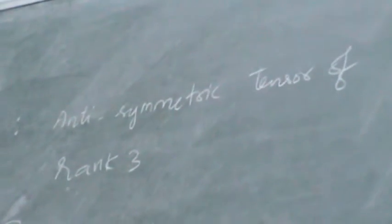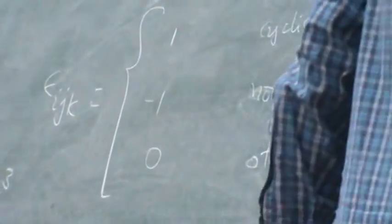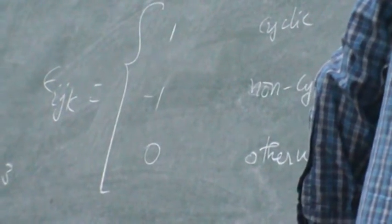Delta I j. Now what is Delta J i k? Minus. Because this is a non-cyclic permutation, it takes a minus sign. So minus Epsilon i j k.